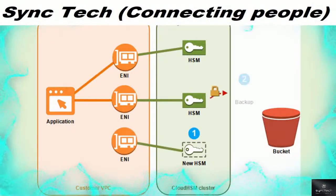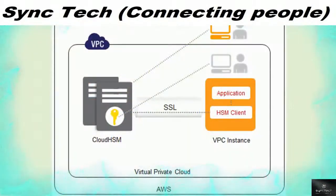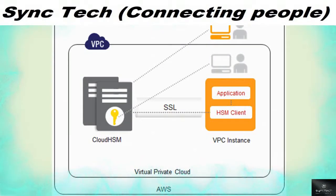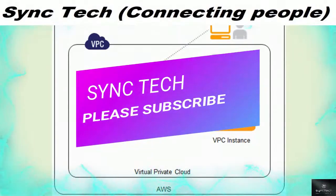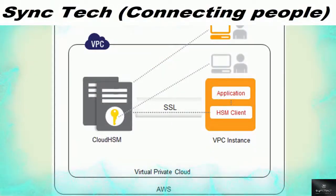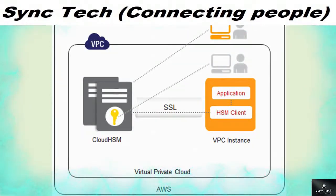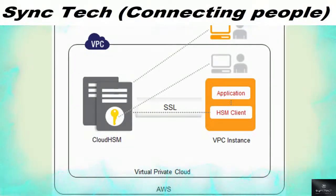This example shows Cloud HSM used with a VPC. We have an HSM instance connected via SSL to different VPC instances — one application instance is shown, but multiple instances can run simultaneously in sync. Authentication is handled at the hardware security module stage using cryptographic keys presented to the client.